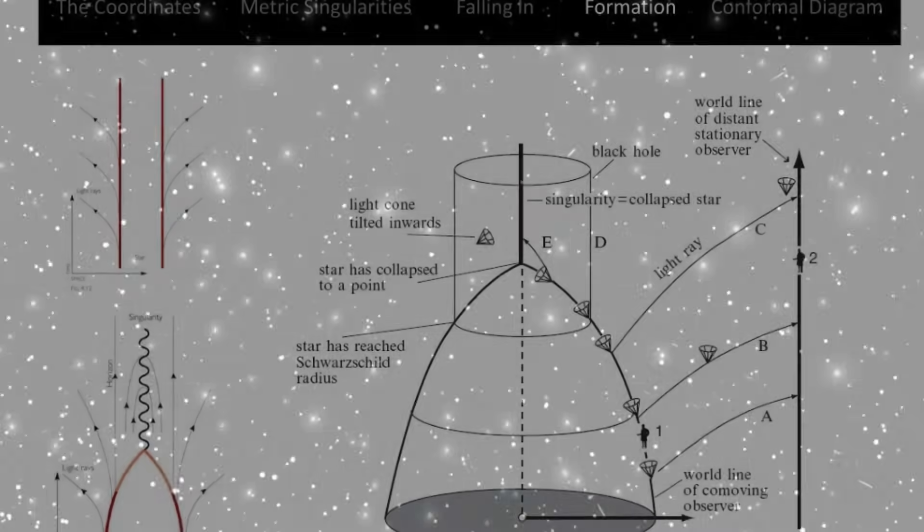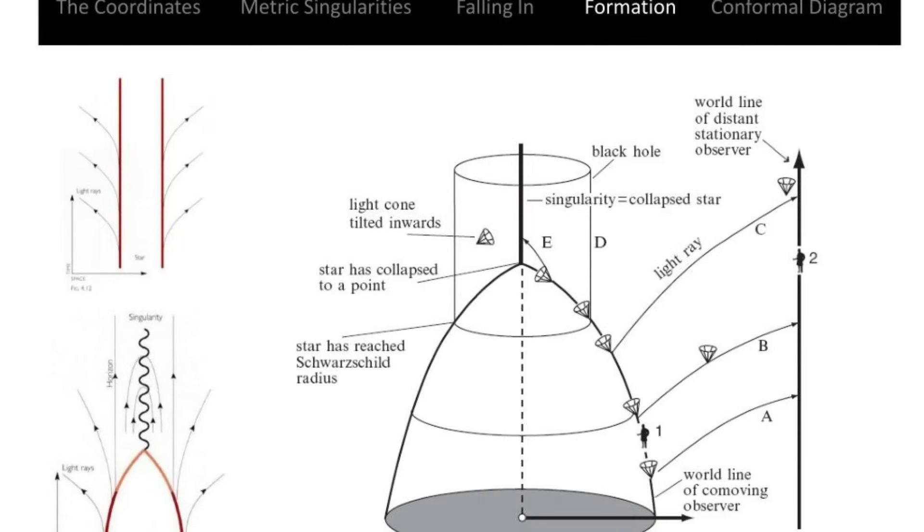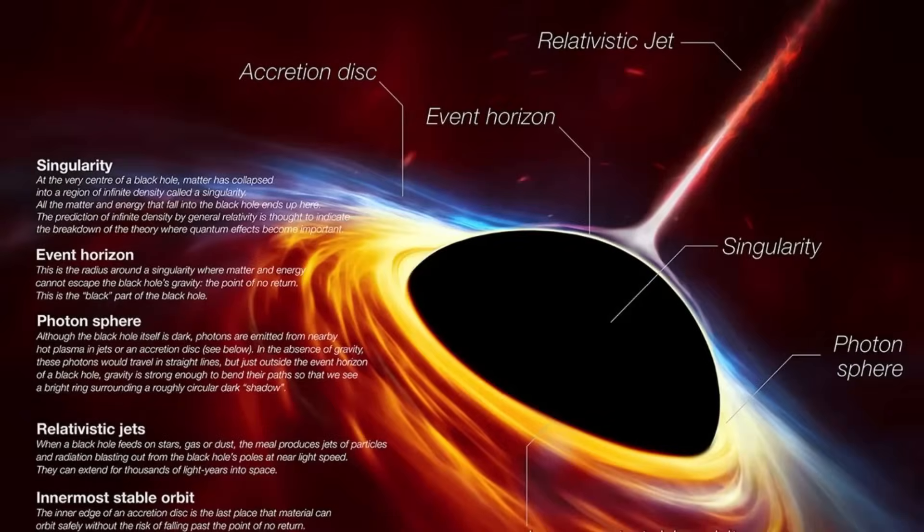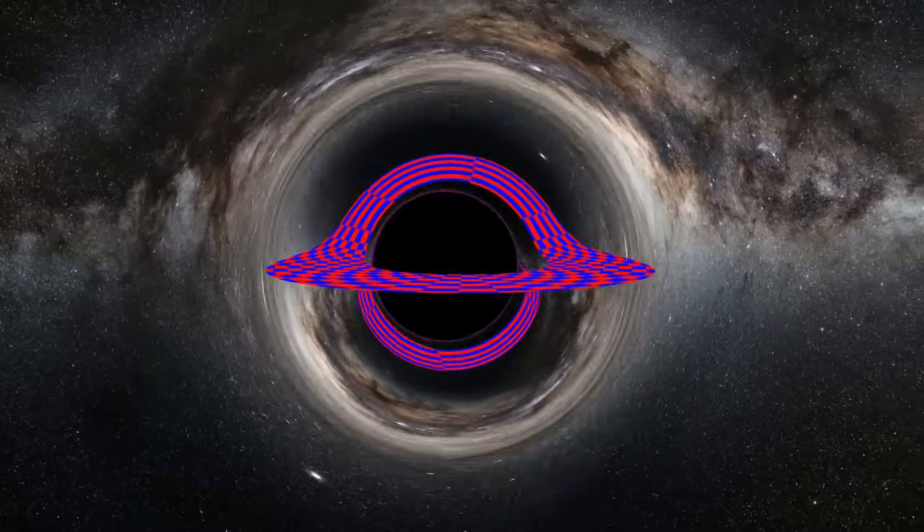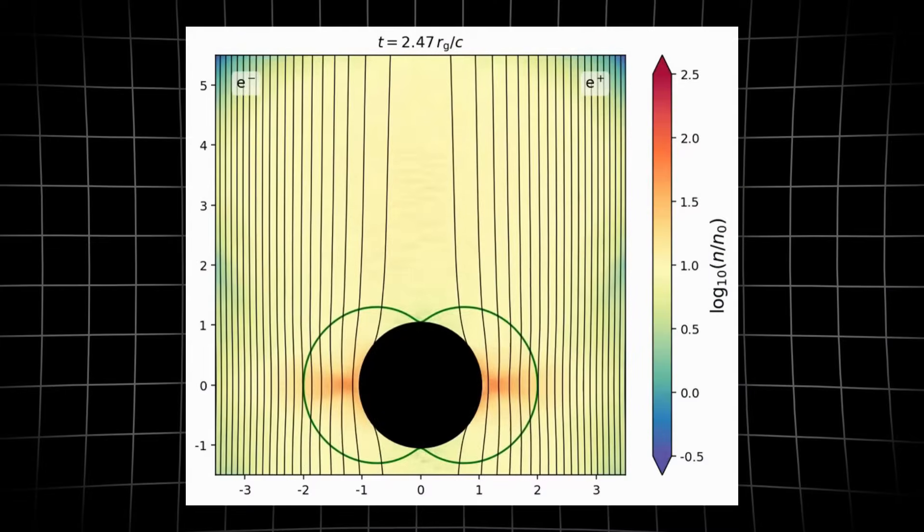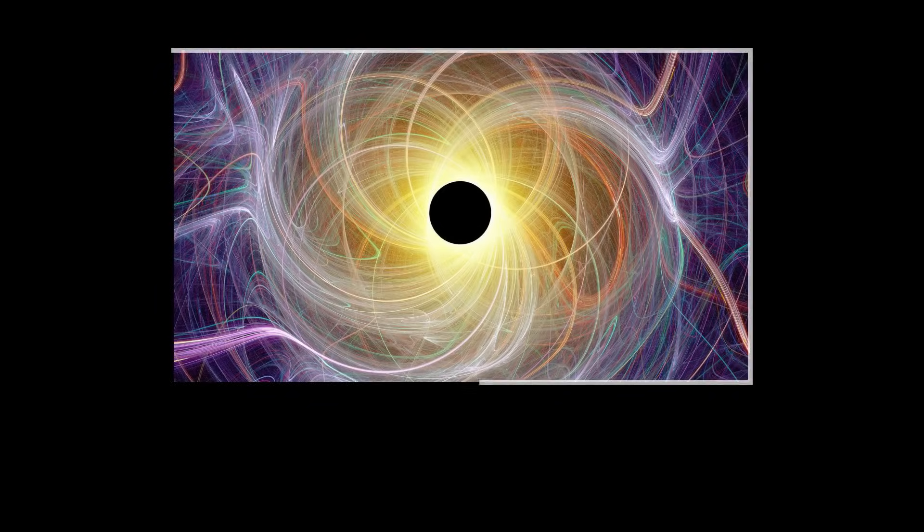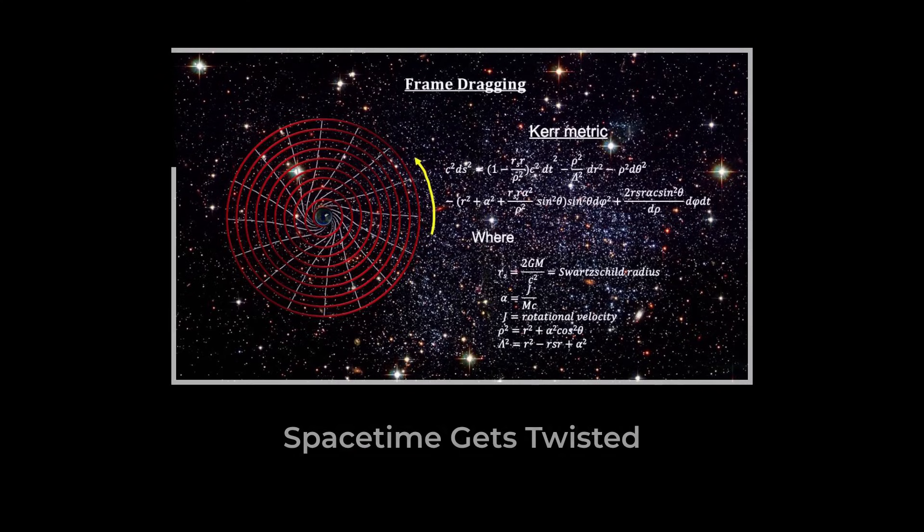But there's more than one kind of black hole in the math. The simplest, called Schwarzschild, has no spin and a single point singularity at its center. The more realistic kind though, the kind that actually forms in nature, is the Kerr black hole. It spins. Instead of a point, its singularity is a ring, and the space around it twists and drags, pulling everything along for the ride.